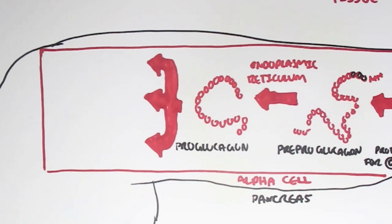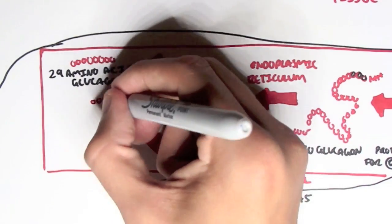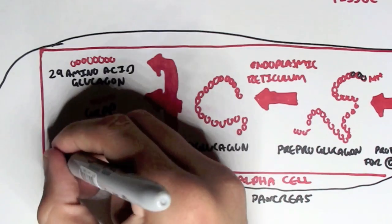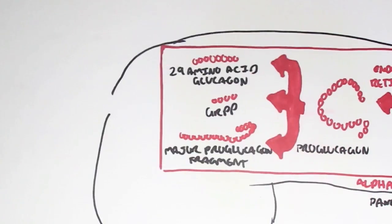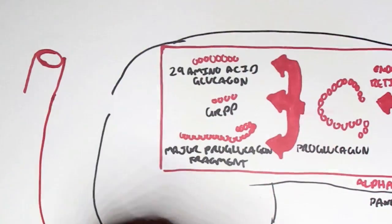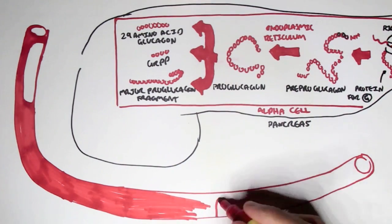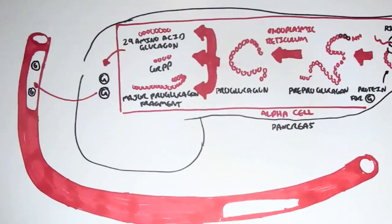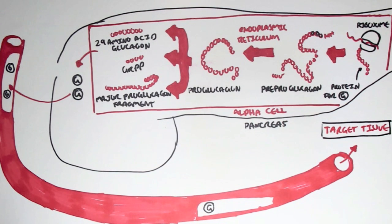The three polypeptides formed are: a 29 amino acid glucagon — the actual hormone we're looking at — a small polypeptide known as GRPP (glycentin-related pancreatic peptide), and also a longer one called the major proglucagon fragment. We're concentrating on the 29 amino acid glucagon. Once glucagon is formed, it can then be secreted by the alpha cells and by the pancreas into the bloodstream, where glucagon will travel to its target tissue — adipose tissue or the liver.